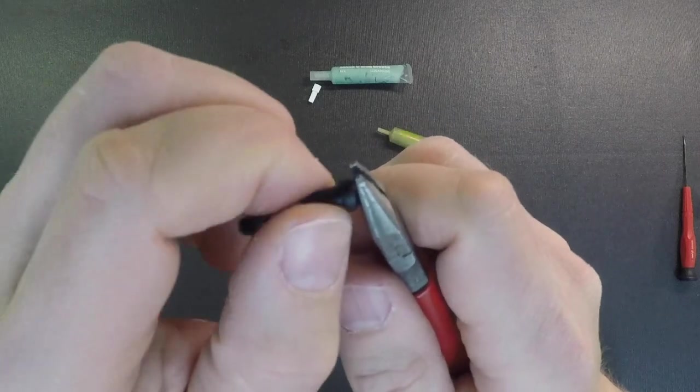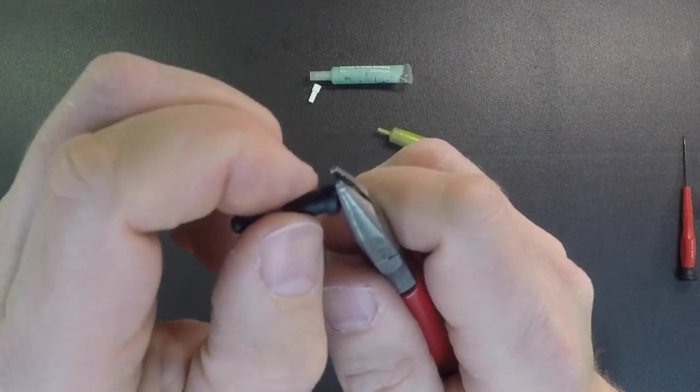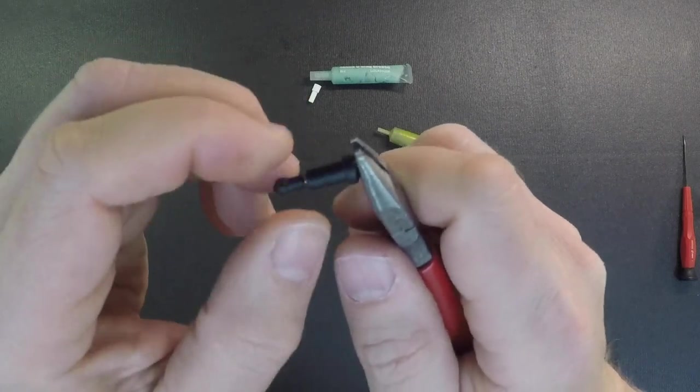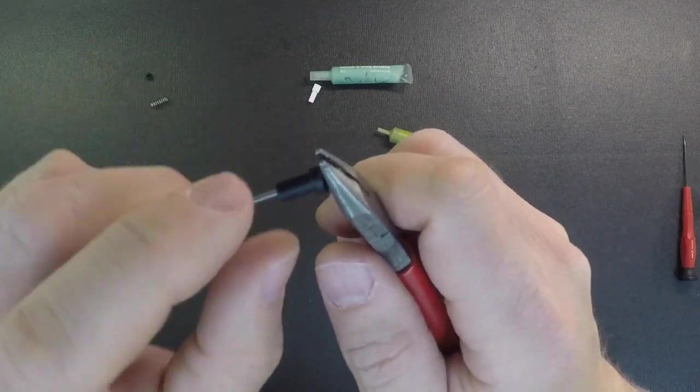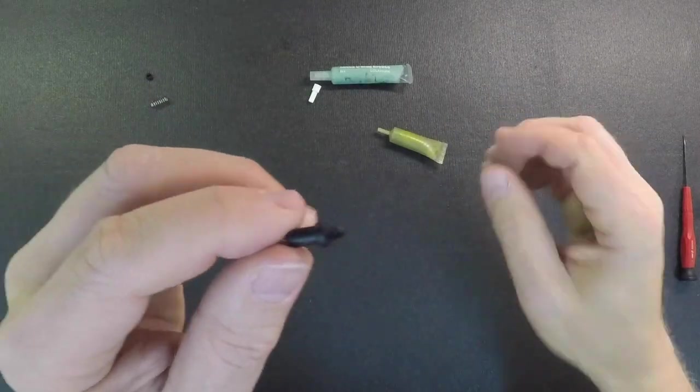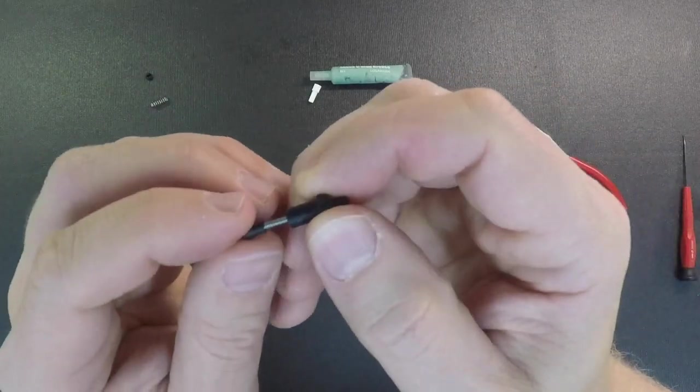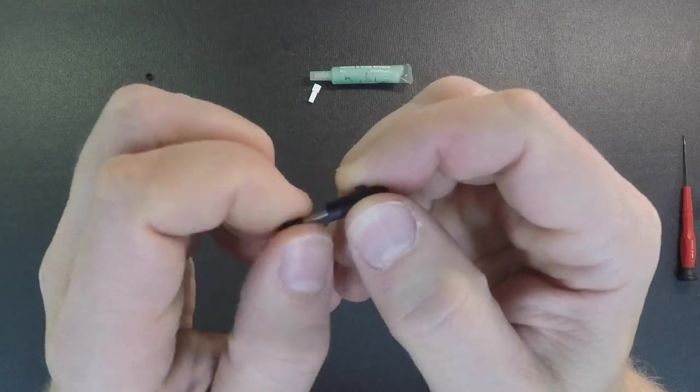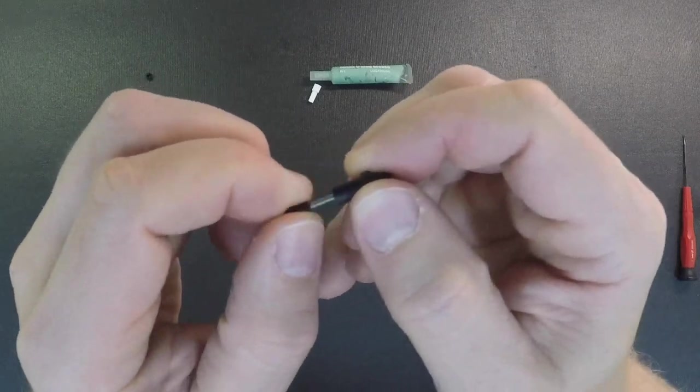Once you get it snapped in, just rotate the shock body and it'll rotate in the cap. Make sure you got it nice and seated very well. If you don't have it seated right, it'll pop off. Before you put the spring and everything back on, make sure the shock operates nice and free. You can rotate the shaft around to smear that grease around in there.